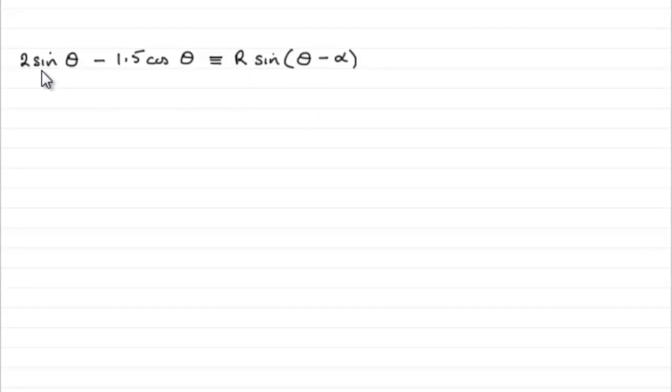Now, whenever you get an expression of this type, that type being of the form a sine theta minus b cos theta, we should know that this is always going to be identical to r sine of theta minus alpha, where r is always the square root of a squared plus b squared, and alpha is equal to the inverse tan of your b value divided by your a value.